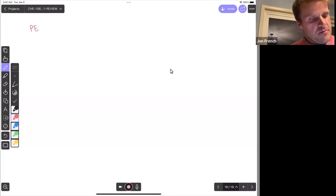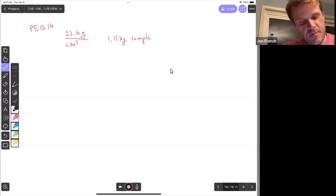All right, practice exam question 16. Osmium has a density of 22.6 grams per cubic centimeter. What volume would be occupied in cubic centimeters by a 1.11 kilogram sample?